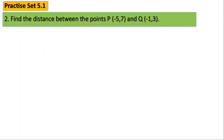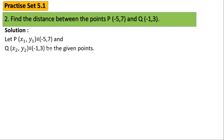The second question is: find the distance between the points P(-5, 7) and Q(-1, 3). We are going to consider point P as (x1, y1) and point Q as (x2, y2). So x1 = -5, y1 = 7, x2 = -1, and y2 = 3.